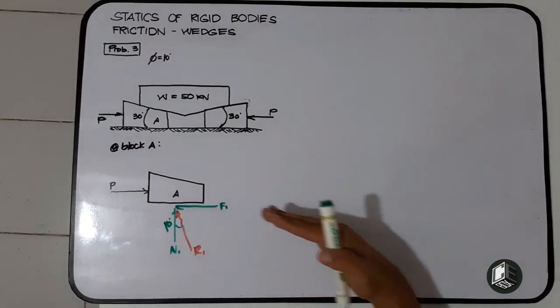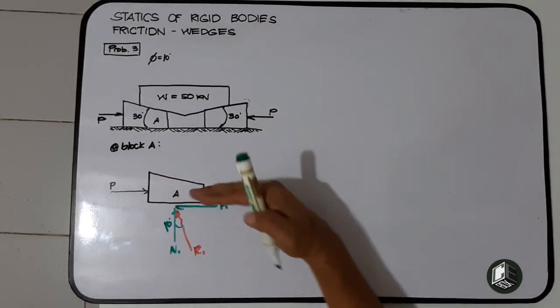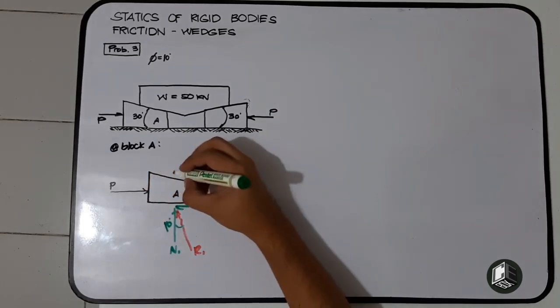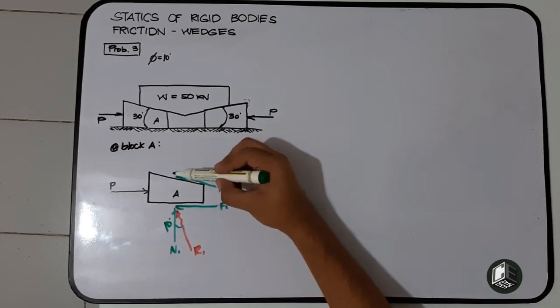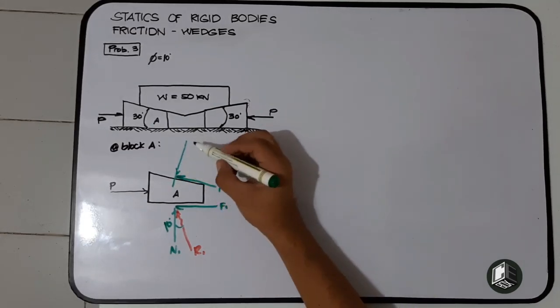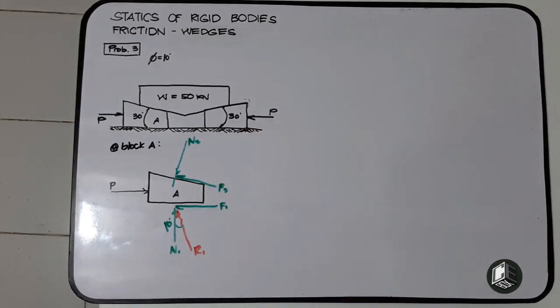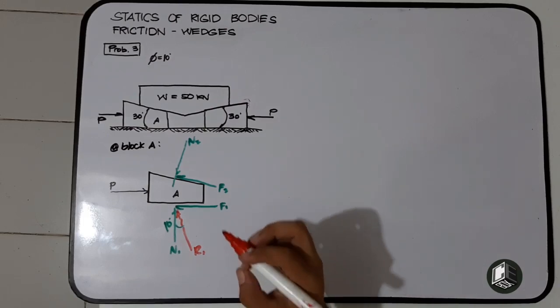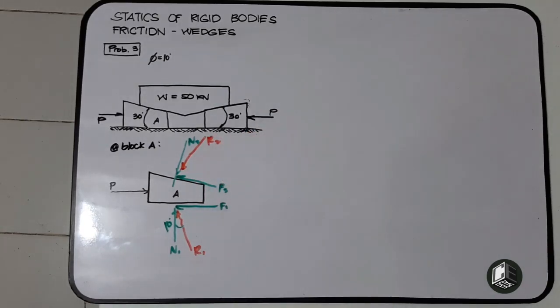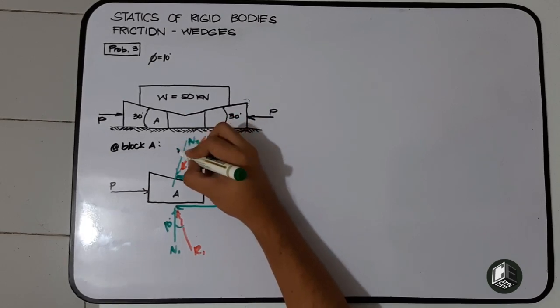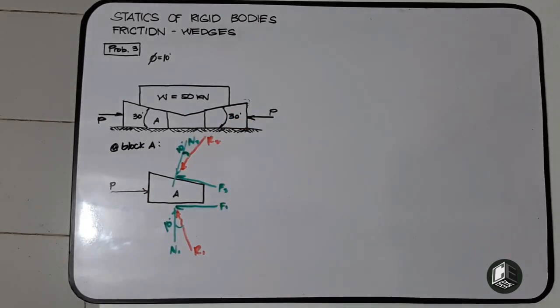Then the frictional force F2 is going to the left. This is frictional force F2 and this is normal force N2. So this is force R2, which is 10 degrees with N2.